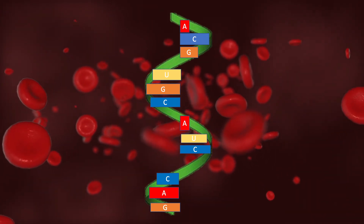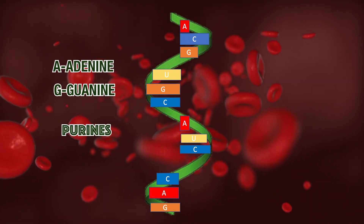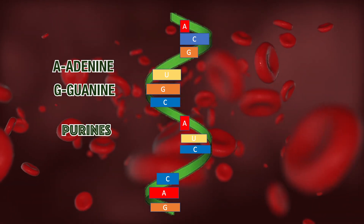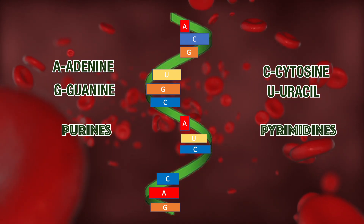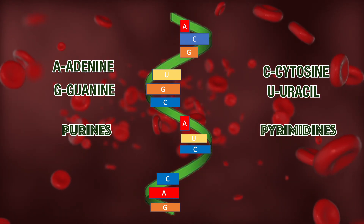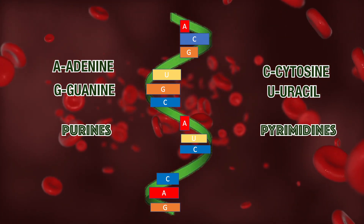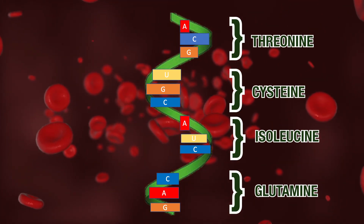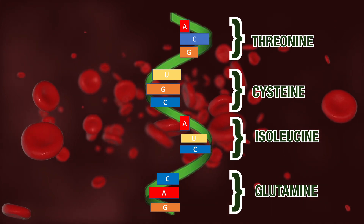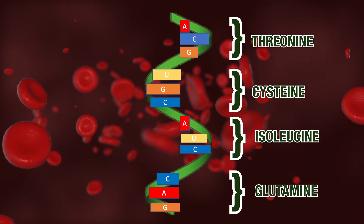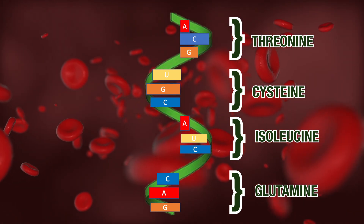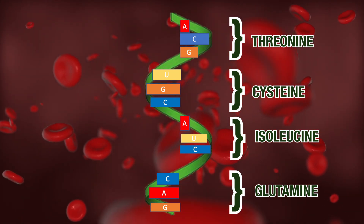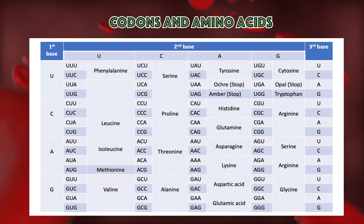The four types of nucleobases are adenine and guanine, which are purine bases, while cytosine and uracil are pyrimidine bases. Three nucleobases form a codon, which defines which amino acid to form. This is the codon table.